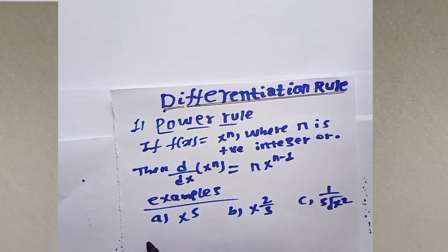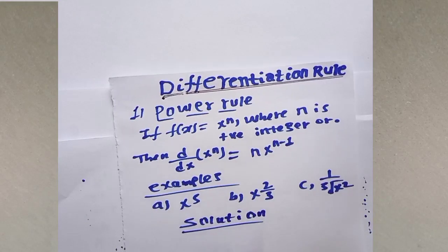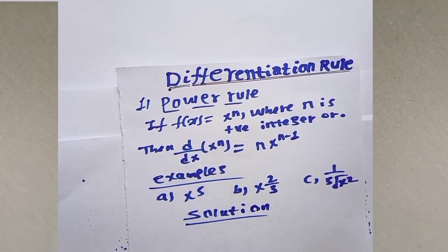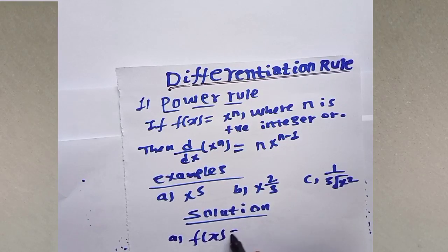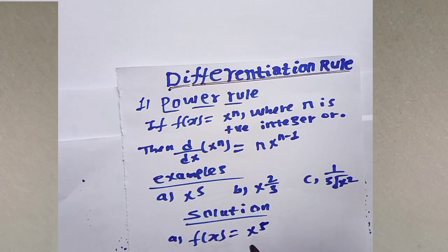Observe these examples carefully and identify n. In the first one, example a, f of x is equal to x to the power of 5, so n is equal to 5.